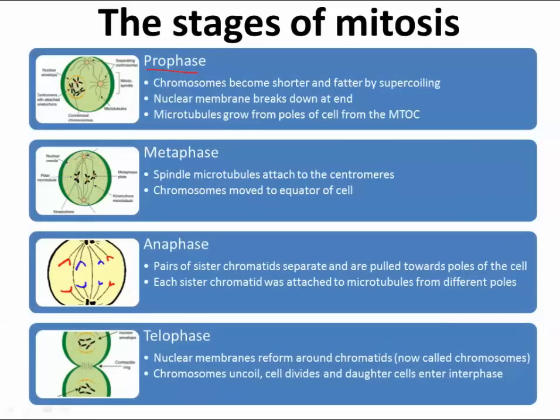Finally, telophase: we start to see two cells forming, each one now with an exact copy of the original DNA. Mitosis is about cloning cells — making exact copies. It's not about creating new sperm or egg cells; that's called meiosis, not mitosis. Mitosis is good just for repairing cells, or as a way of asexual reproduction if you're a single-celled organism.